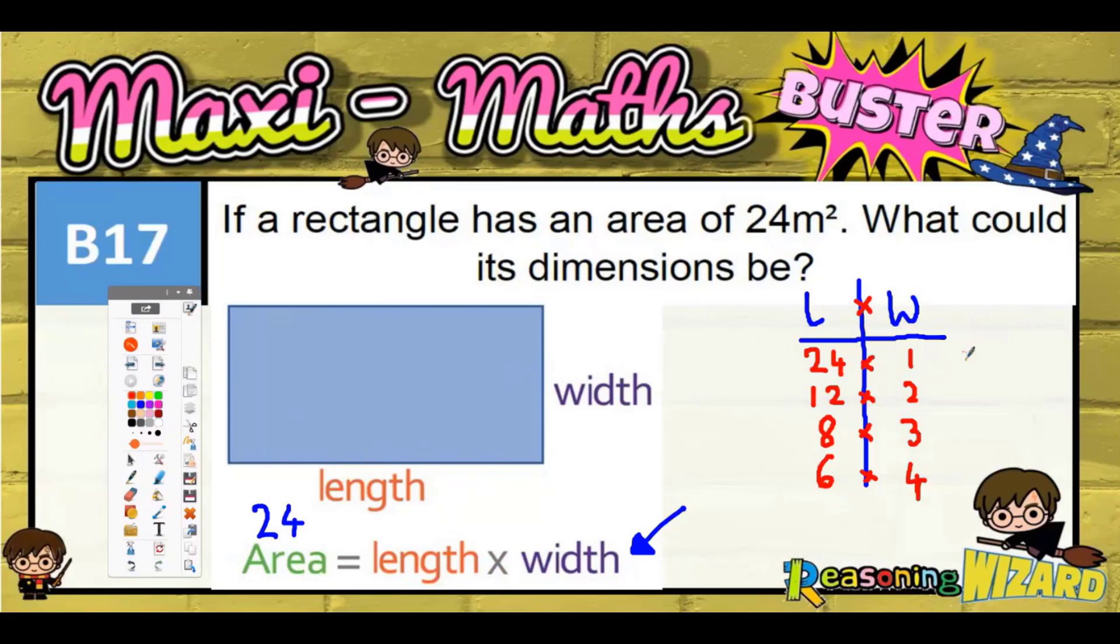But of course, you could actually flip these around and have 1 as the length and 24 as the width. So any of these could be flipped around. So there's basically four answers, and any of these four combinations of length times width making 24 are acceptable.